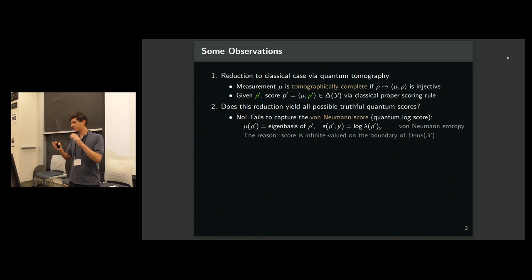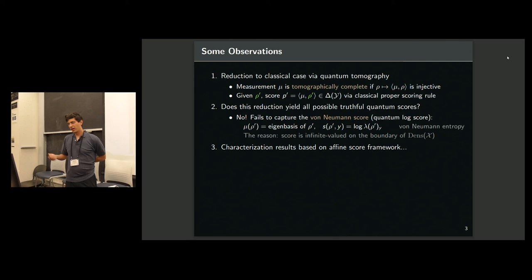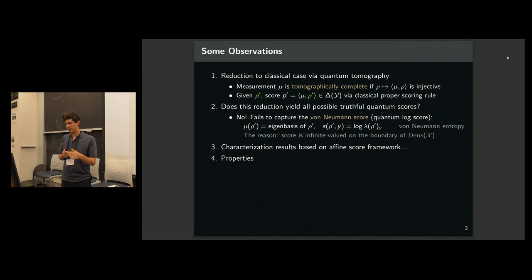And what's interesting is there's a surprisingly technical reason why this first reduction misses this. It has to do with taking infinite values on the boundary of the set of density matrices. So I also give some more general characterizations. I think what's more interesting, especially interesting here, is properties.